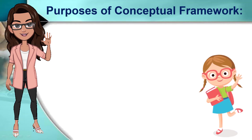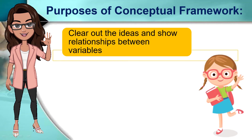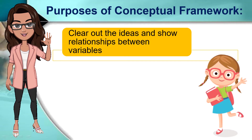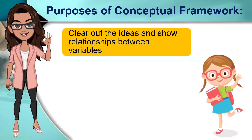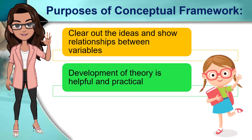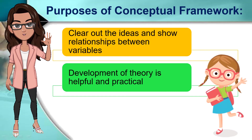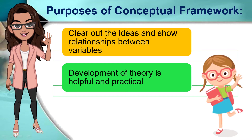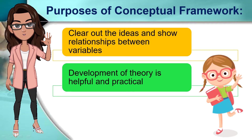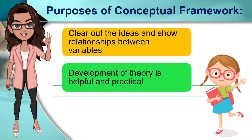The fourth purpose of conceptual framework: the main purpose of this framework is to connect the ideas and the relationship of the variables to be used in your study. With the use of arrows and lines, you can show the connection and explain the idea behind those. Fifth, while gathering related literature and study, you can see different information that might lead you in the development of a theory that is helpful and practical. Although this is not commonly happening to every paper, there are times that the researcher was able to develop a theory when comparing and contrasting the ideas and variables.